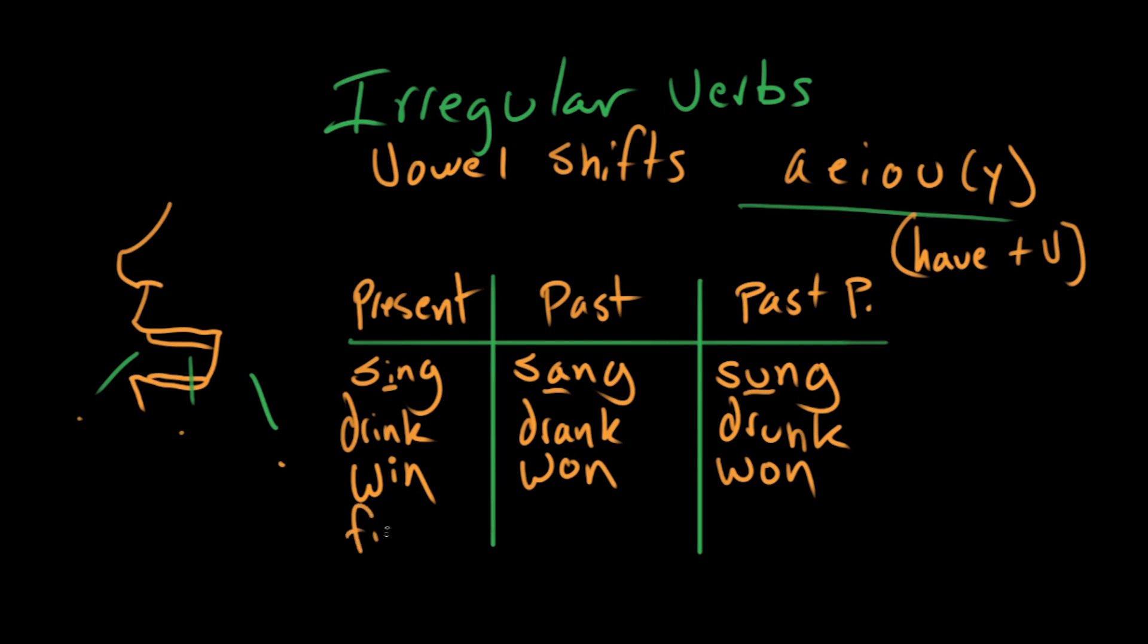The verb to find. So in the present tense, it's find. And in the past and past perfect, it's found. It goes from ai to au.